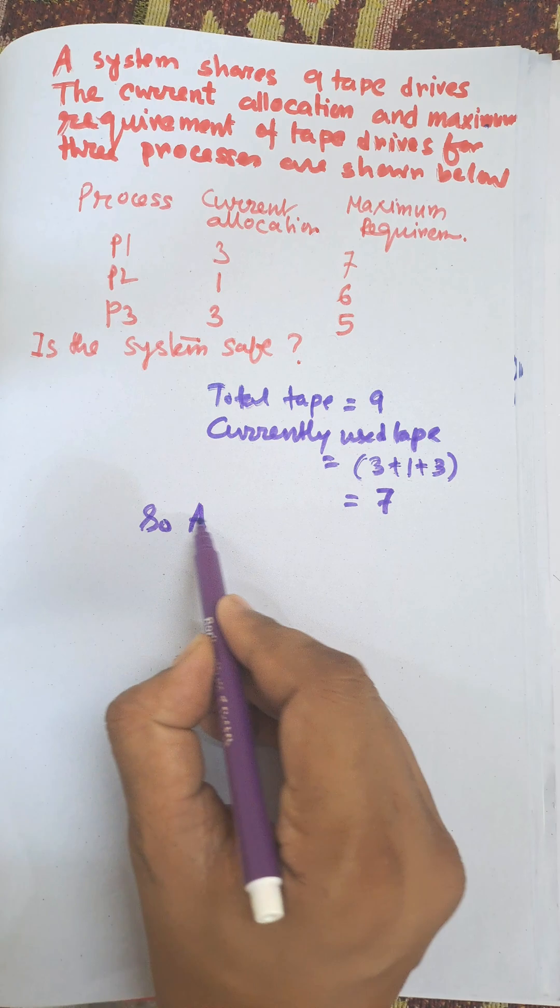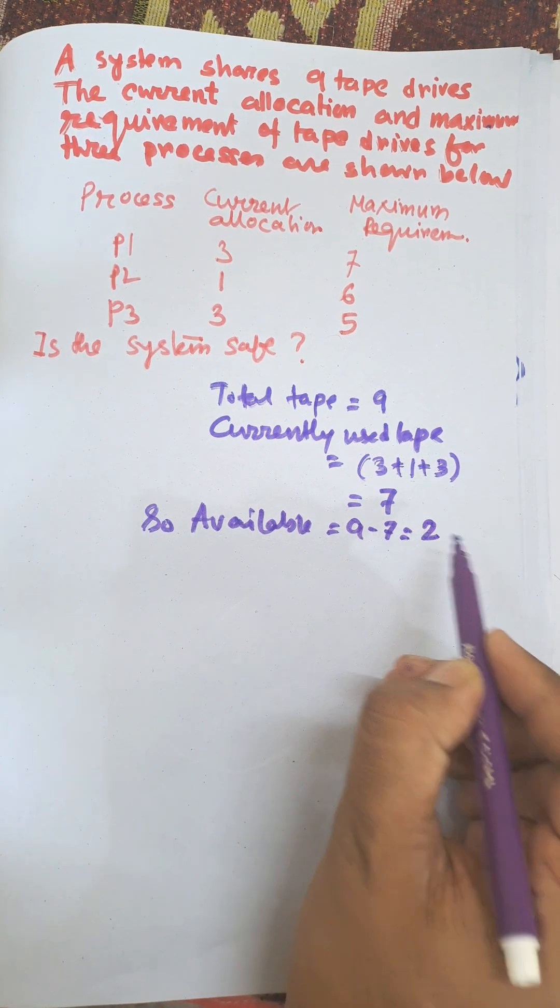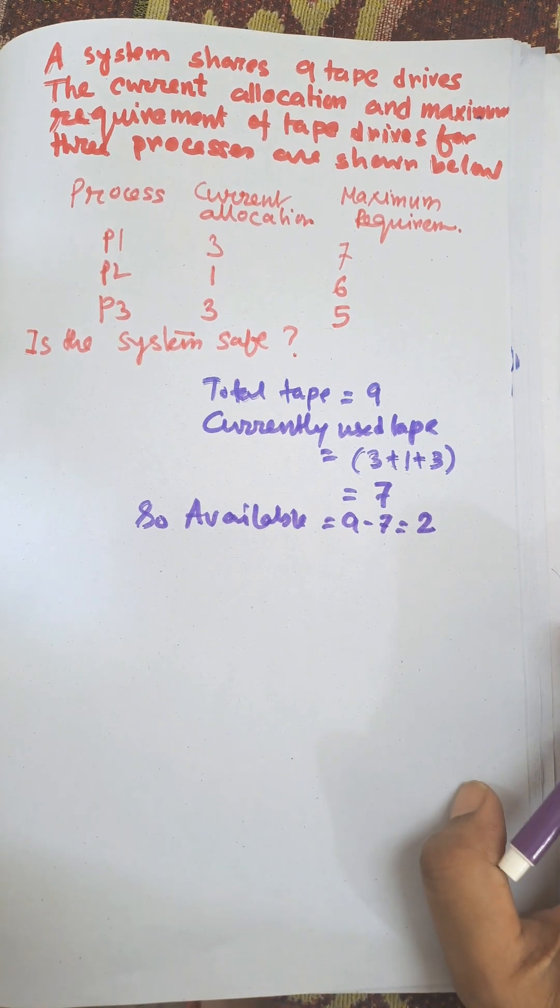So available equal to nine minus seven, that is equal to two. So there are two tape drives available in the system.